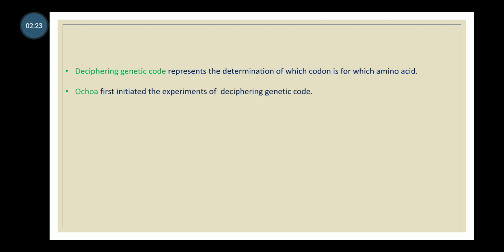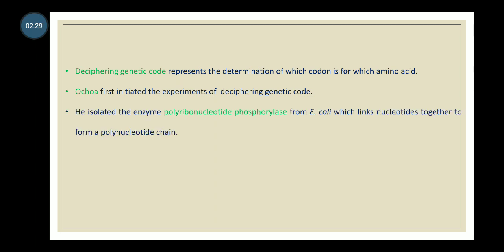Ochoa was the first scientist to initiate experiments on deciphering the genetic code. He isolated the enzyme polyribonucleotide phosphorylase from E. coli, which links nucleotides together to form a polynucleotide chain. The discovery of this enzyme was key to deciphering the genetic code.